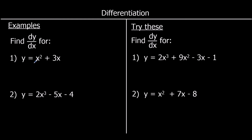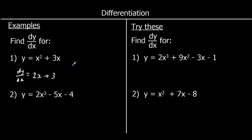When we have an equation with more than one term, we just differentiate them separately. For y equals x squared plus 3x, dy/dx: differentiate x squared — times by the power, 1 times 2 is 2, take one off the power, 2 take away 1 is 1 — we just write as 2x. Then we've got plus 3x; the gradient of 3x is just 3. So dy/dx is 2x plus 3.